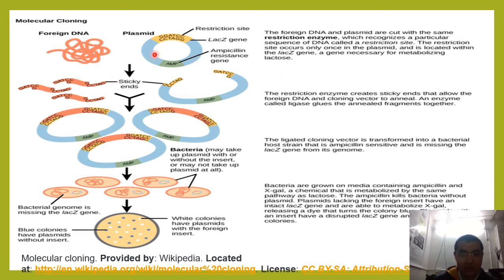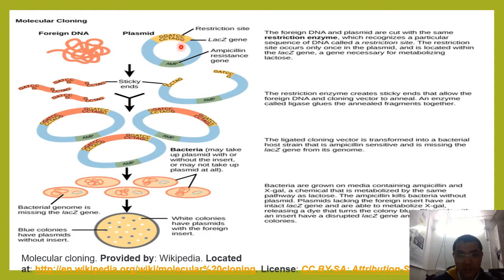Why are we using the same restriction enzymes? Because we are producing the same sticky ends. The same restriction enzymes recognize their specific sequences in this foreign DNA as well as in the plasmid. This is the restriction site of these enzymes.